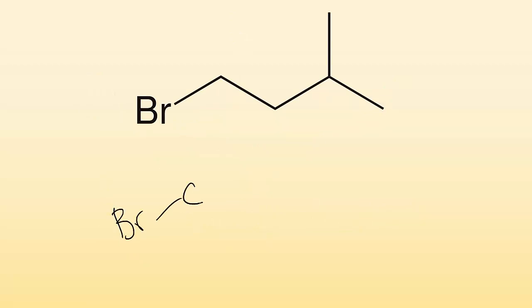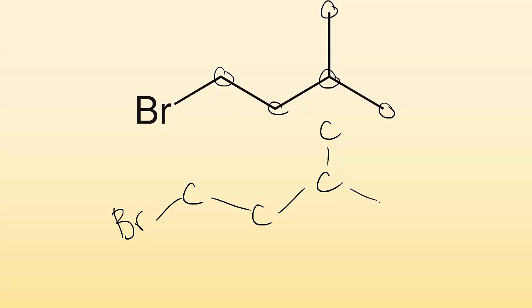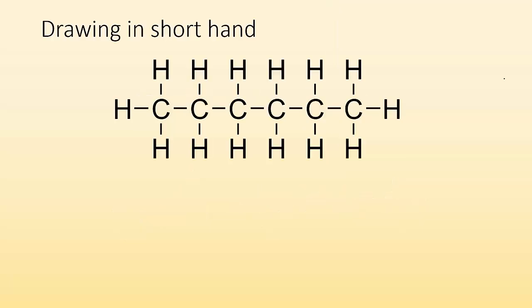This one is telling me I've got bromine (Br), and it's connected to a carbon right here, which is connected to another carbon, which is connected to another carbon. Off of that carbon I have a carbon up here and a carbon down there. Now I can go in and fill in the rest with hydrogens: two hydrogens, two hydrogens, three hydrogens, one hydrogen, three hydrogens. That's how you interpret those structures.